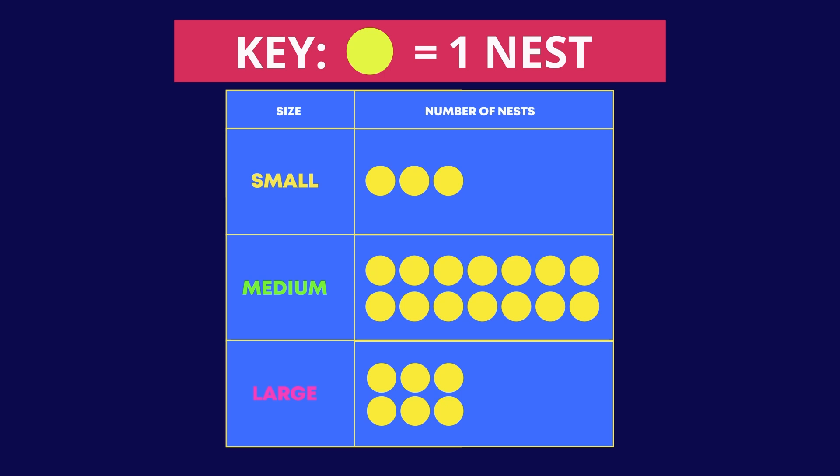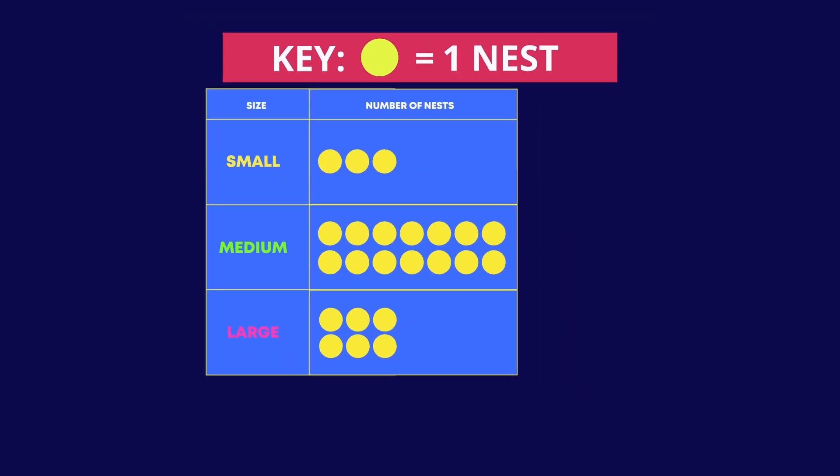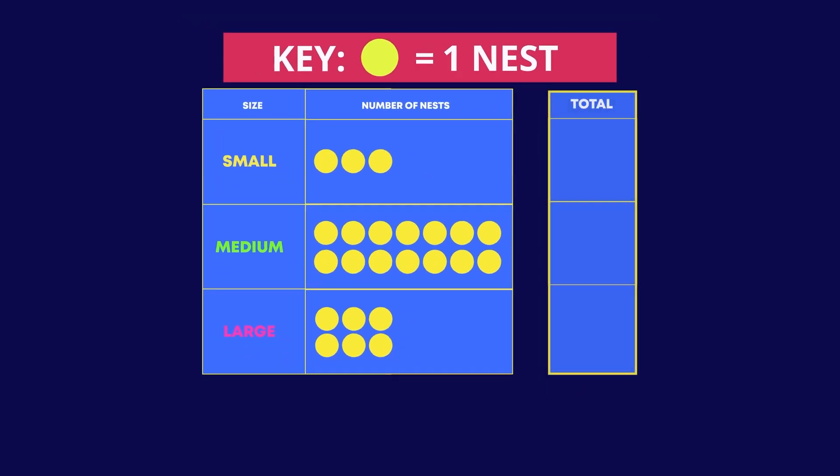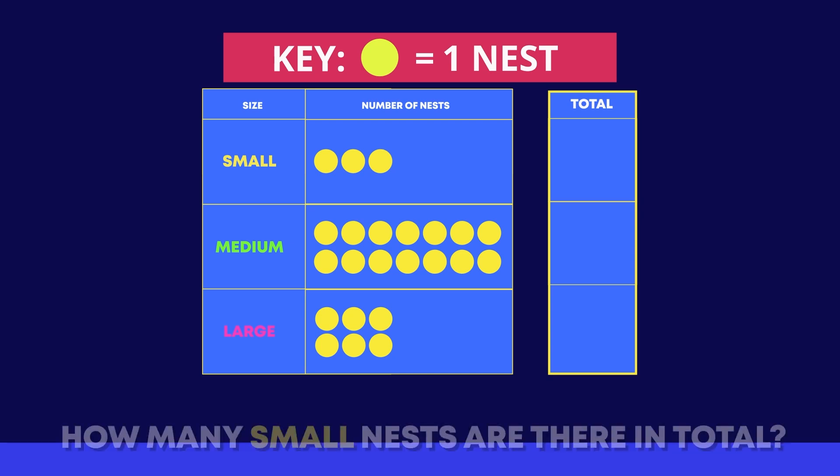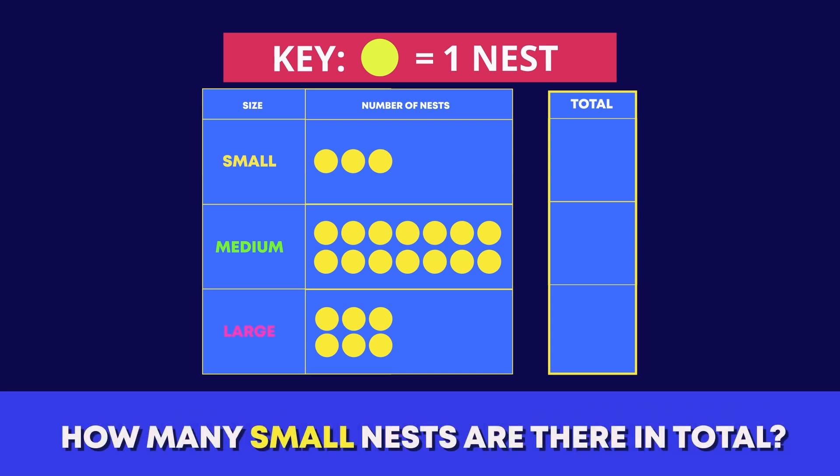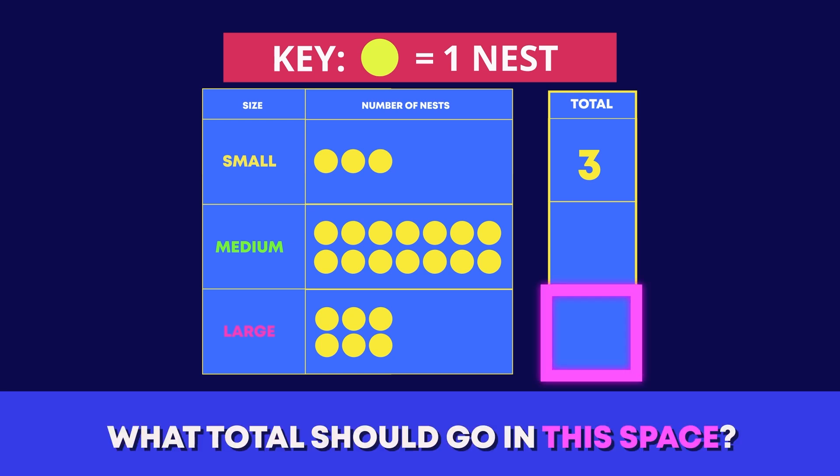This key tells us that one circle represents one nest. The space rangers need our help completing the table. How many small nests are there in total? Three is right. What total should go in this space? Six, great work!